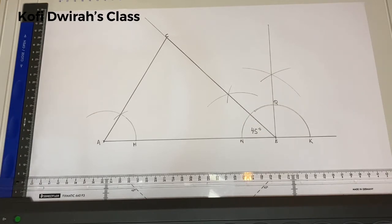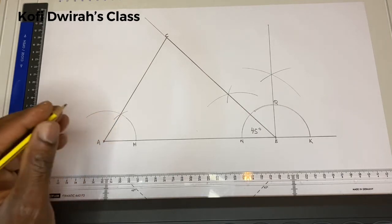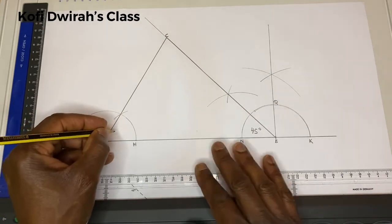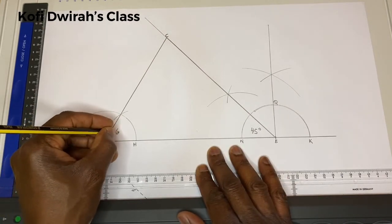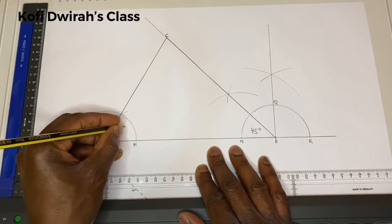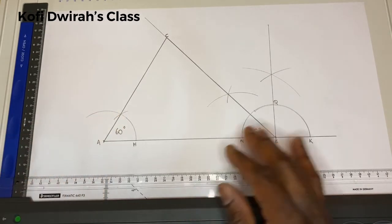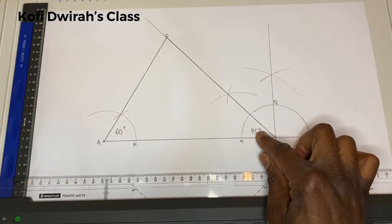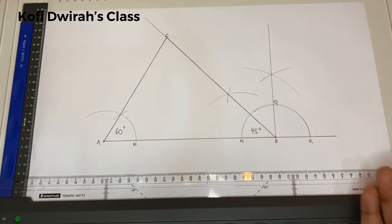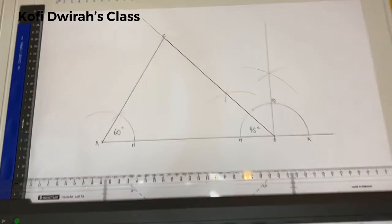That is how to construct a triangle given two angles and one side. We have our 60 degree angle here at A and our 45 degree angle here at B. This is what I have for you today.